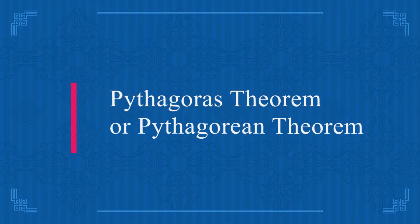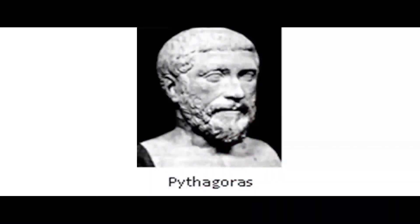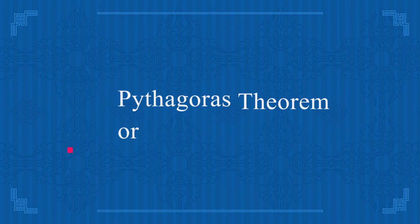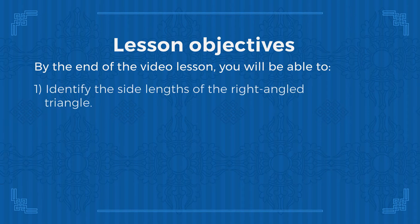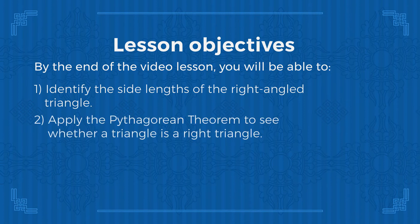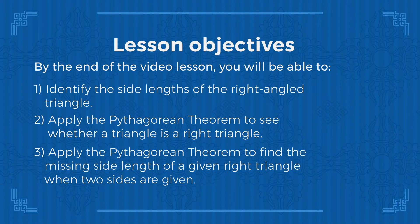This relationship is called the Pythagorean Theorem, which was proved by a famous Greek mathematician called Pythagoras, who lived in the 6th century BCE. After learning the Pythagorean Theorem, we will learn how to apply it to solve word problems. By the end of this lesson, you should be able to identify side lengths, determine whether a triangle is a right triangle, and find missing side lengths when two sides are given.